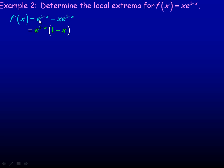Notice there is a common e^(1-x) factor in both parts, so we can factor that out. Factoring e^(1-x) out of the first term leaves 1, and out of the second term leaves x, giving us e^(1-x)(1 - x).